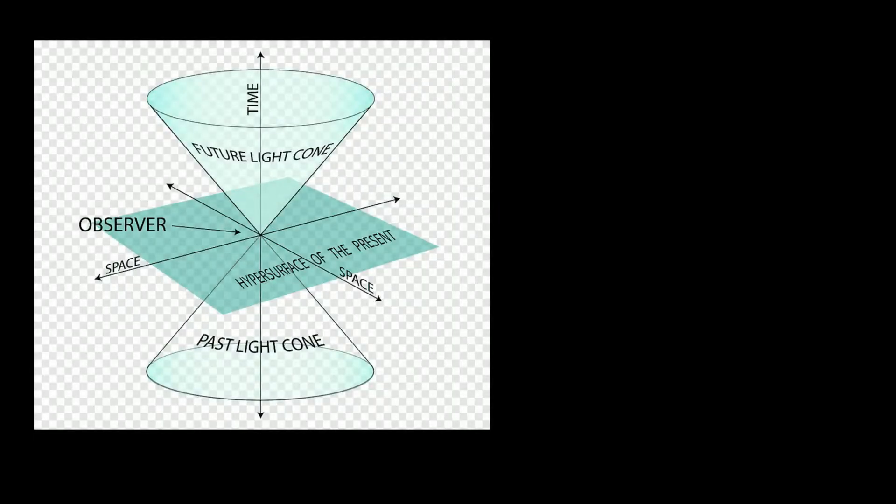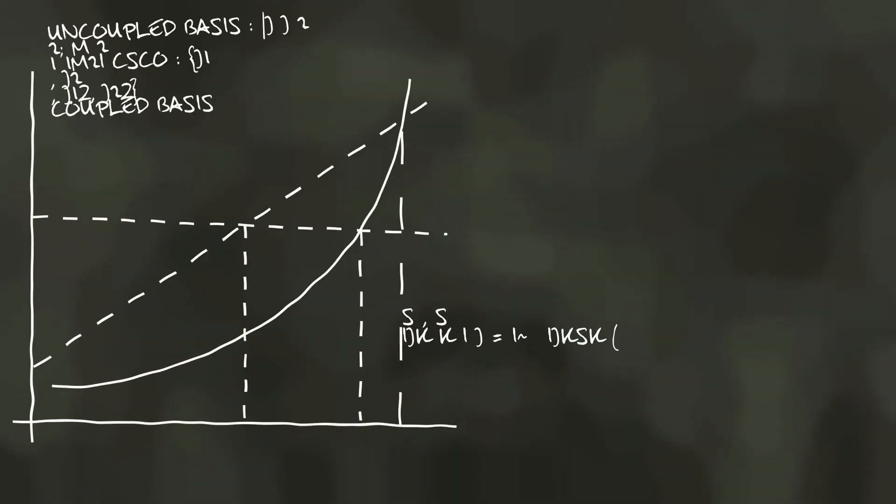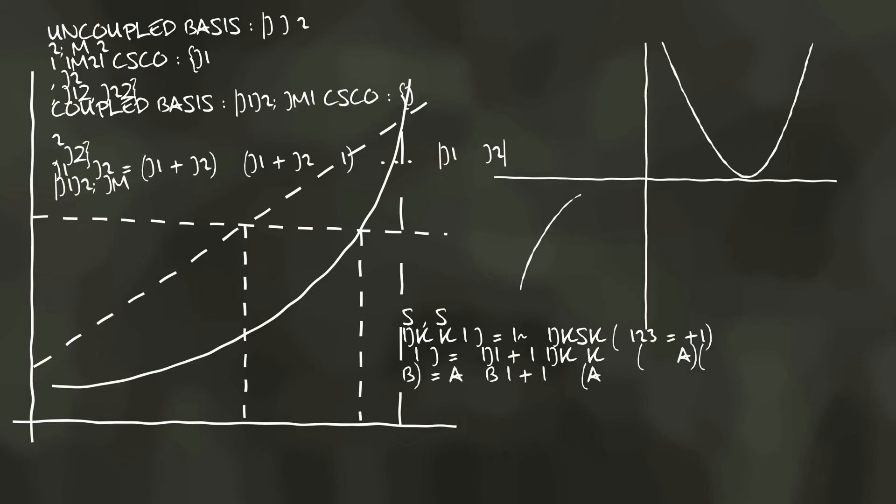Special relativity provides a framework for translating physical events and laws into forms appropriate for any inertial frame of reference. General relativity addresses the problem of accelerated motion and gravity. General relativity talks about the curvature in space-time, whereas special relativity does not talk about any curves.